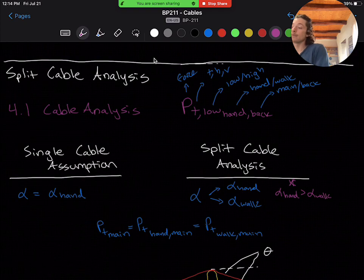Next, we'll take our variable alpha from the basic design course and split this into an alpha hand and an alpha walk to represent the fact that our handrail and walkway cables are at different angles. In the basic course, we took alpha to be our worst case scenario, the alpha hand, the steepest angle.